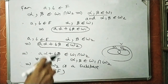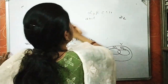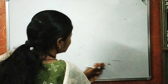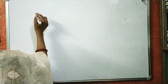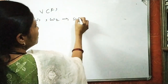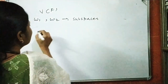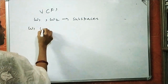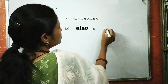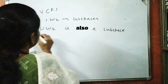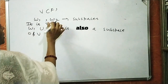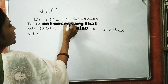However, if we talk about the union of two subspaces, it is not necessary that the union of two subspaces is also a subspace of that vector space. That is, if V is a vector space and W1 and W2 are subspaces of V, then W1 union W2 is not necessarily a subspace of V — it may or may not be. Let us check it.